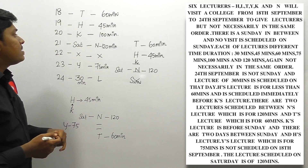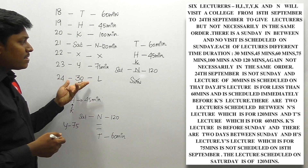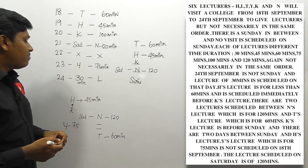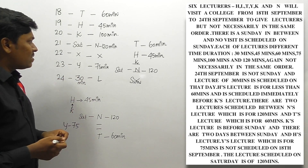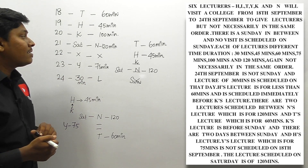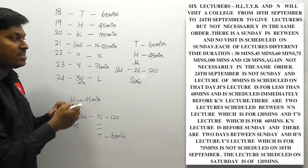So the final arrangement is: L = 30 minutes, Y = 75 minutes, N = 120 minutes (Saturday), K = 100 minutes, H = 45 minutes, T = 60 minutes. This is an interesting arrangement. These types of puzzles are most expected for upcoming SBI and IBPS exams, so practice more questions like this.